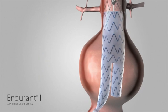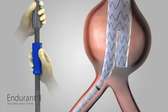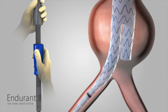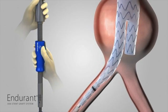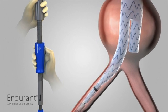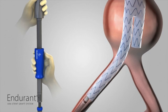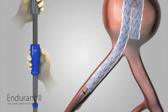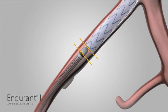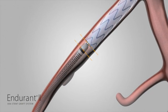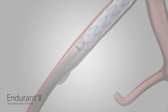There are two methods to deploy the ipsilateral limb of the bifurcated component. Either continue to rotate the slider counterclockwise, or while holding the front grip of the delivery system stationary, use your thumb to pull the trigger on the slider and pull it back all the way until the distal stent of the ipsilateral limb is completely deployed. Land the graft cover radiopaque marker one centimeter past the front end of the round stent stop.